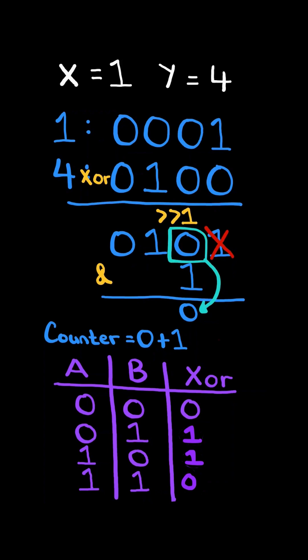We bitwise AND the result by 1 to get the last bit and add it to counter. Then we right shift the result by 1 to remove the last bit and continue this algorithm.